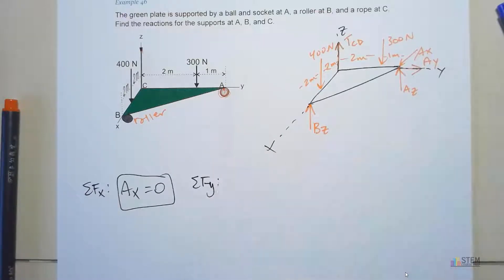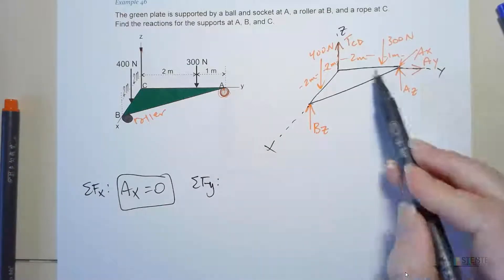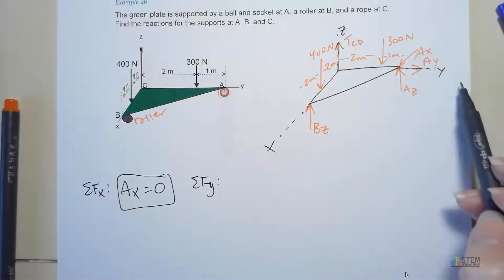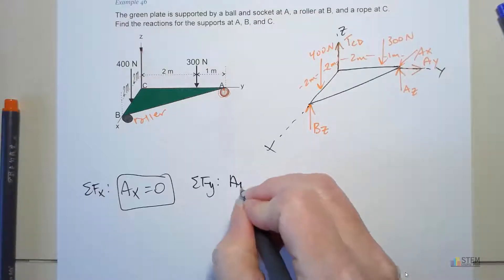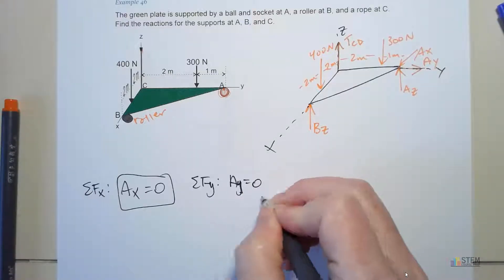Now let's look at the Y component. This is the Y axis. How many forces do we have in that direction? We only have the Y component due to the ball and socket. So AY is going to be zero.